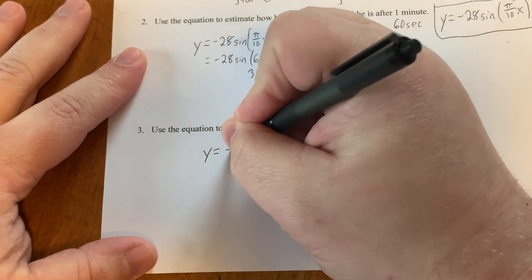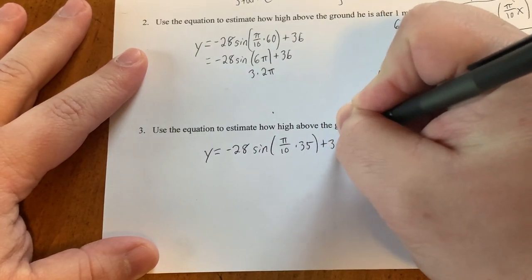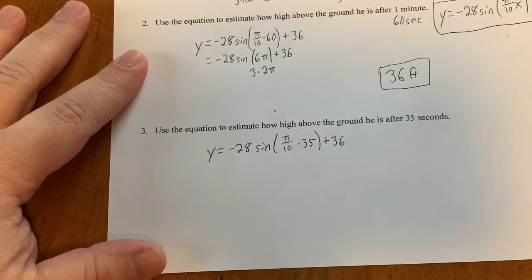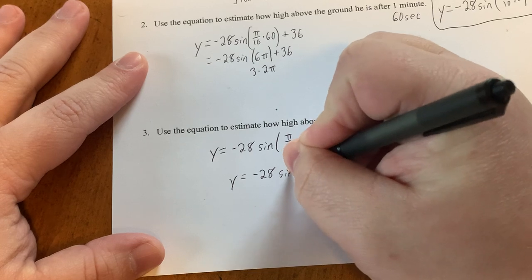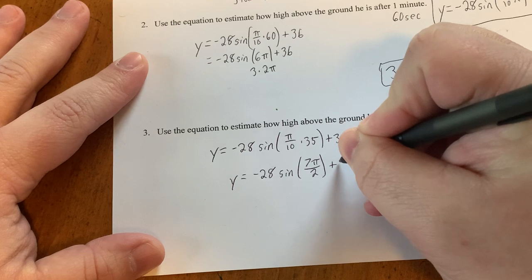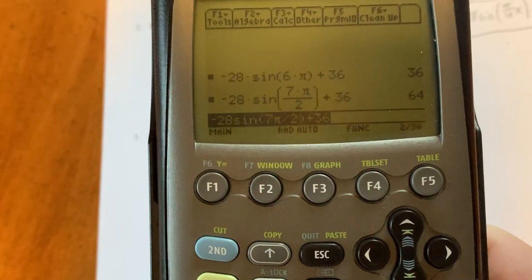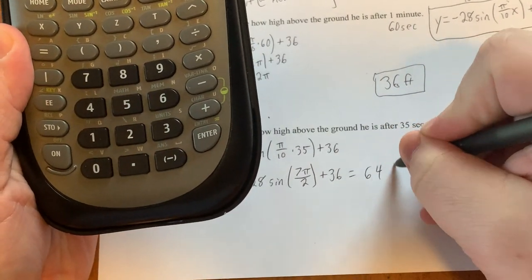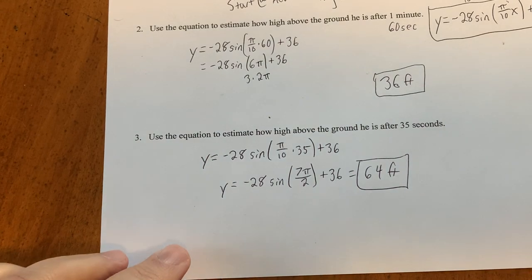And then for the next one y equals negative 28 sine of π over 10 times 35 seconds plus 36 because we're looking for the height after 35 seconds. Well, 35 over 10 can simplify to 7 over 2, so it's y equals negative 28 sine of 7π over 2. If you hear that noise that's just my cat playing with this food bowl. So now we just punch that in. Give me a moment. And that when we punch that in we get 64. There we go. Fantastic. So that's how you would solve this one. Let me know if you have any questions.